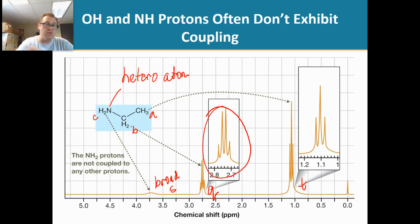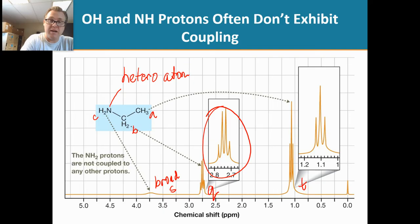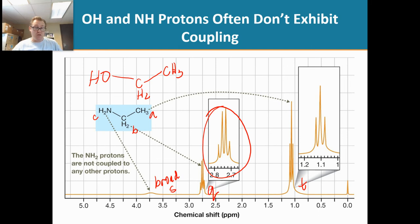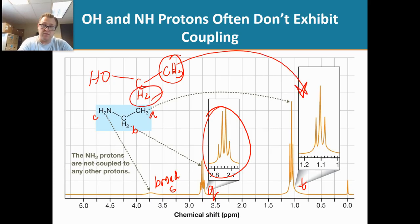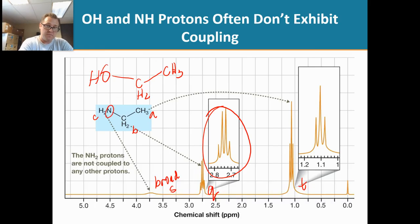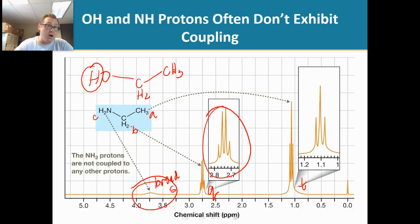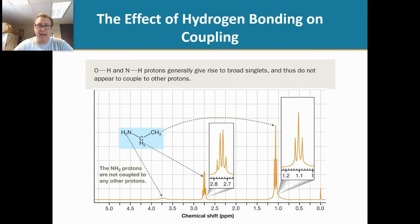So we've noticed that Hc doesn't couple with Hb — that's the general rule: protons on heteroatoms don't couple. We could take this molecule and change it up a bit and get a very similar NMR spectrum. If I had ethanol, this methyl group would still have the same splitting pattern and the methylene would have the same splitting pattern. I've exchanged out the nitrogen for an oxygen, so this hydrogen would give us another broad singlet.